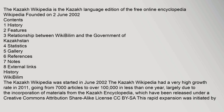The Kazakh Wikipedia is the Kazakh language edition of the free online encyclopedia Wikipedia, founded on 2 June 2002. Contents: History, Features, Relationship between Wikibilum and the Government of Kazakhstan, Statistics, Gallery, References, Notes, External links. The Kazakh Wikipedia was started in June 2002.